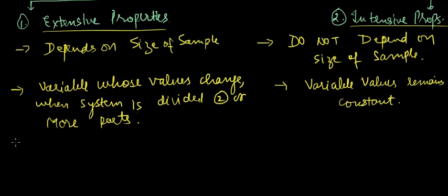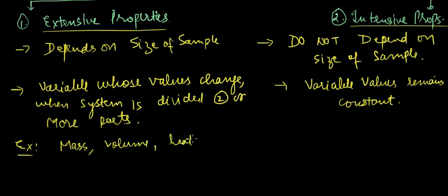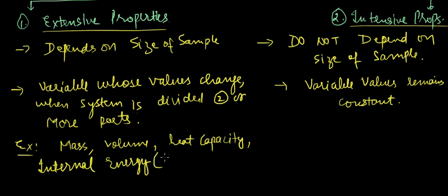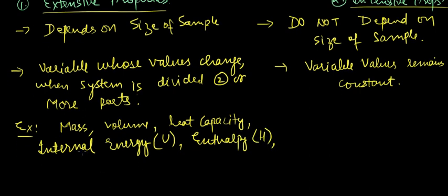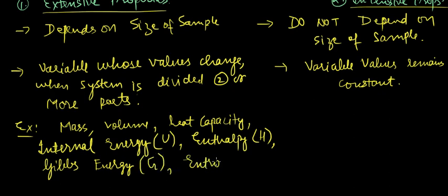Examples of extensive properties include mass, volume, heat capacity, internal energy, entropy, enthalpy, and Gibbs energy. We will be discussing internal energy more in coming lectures, so no need to worry if you don't know about it yet.